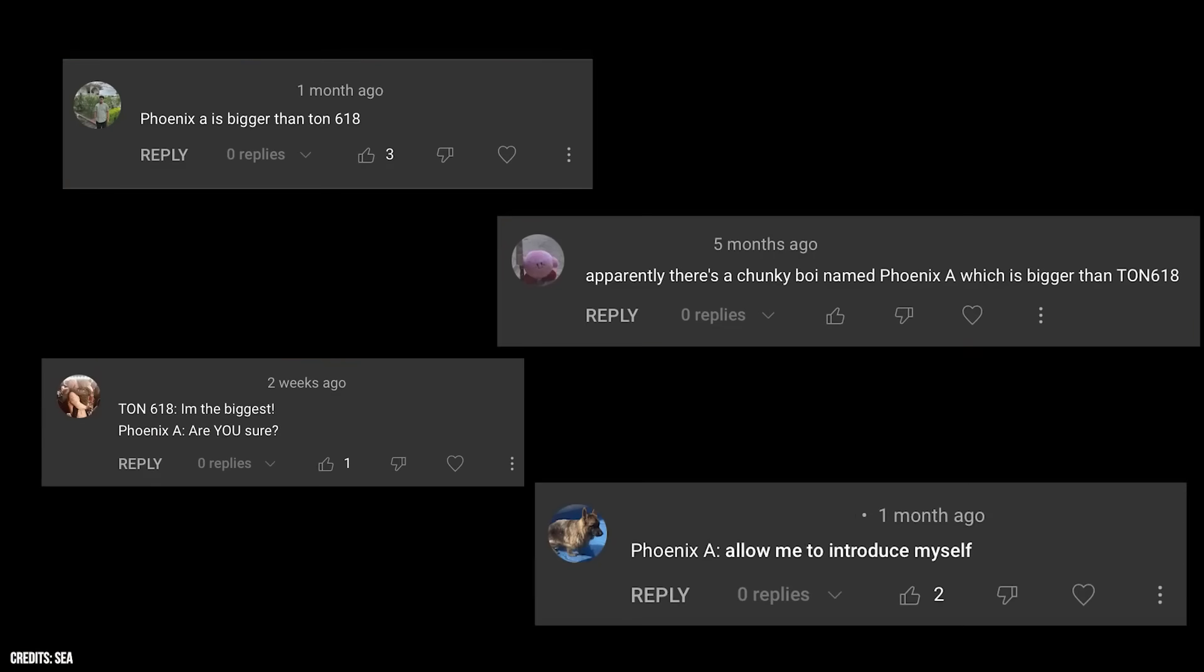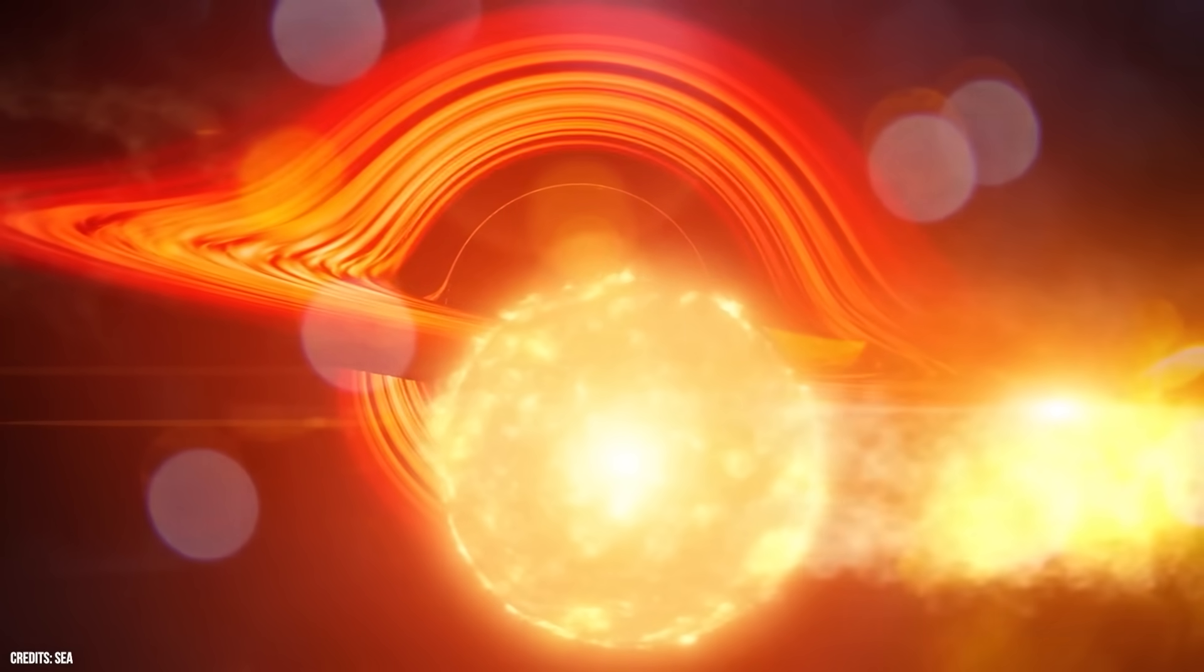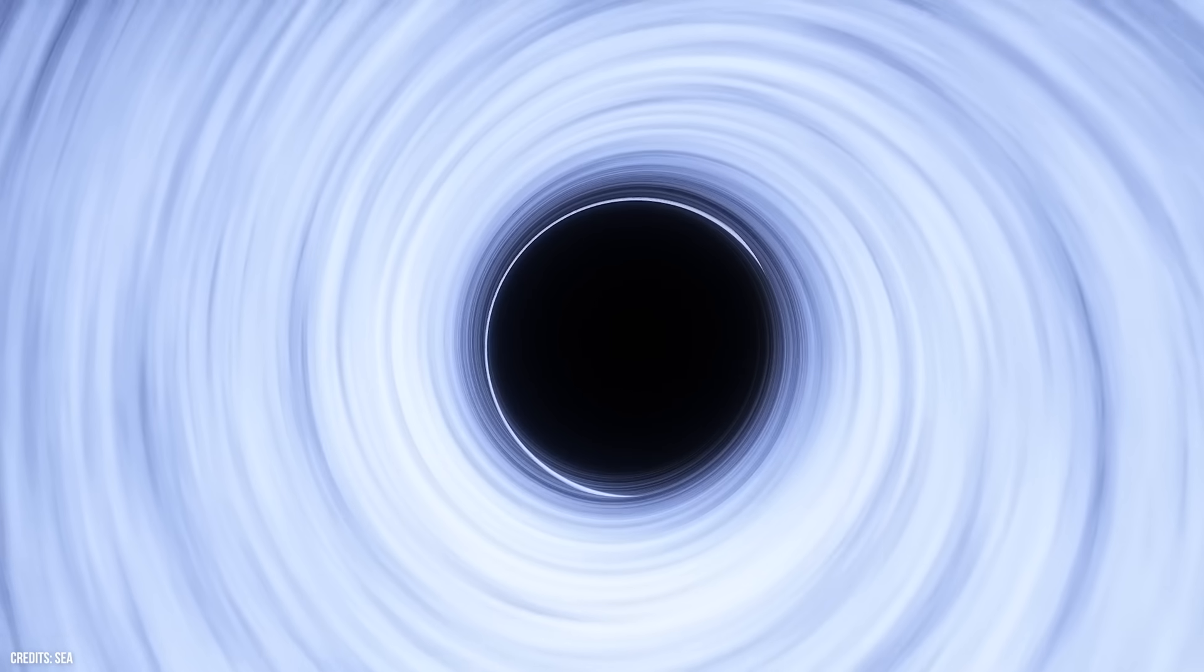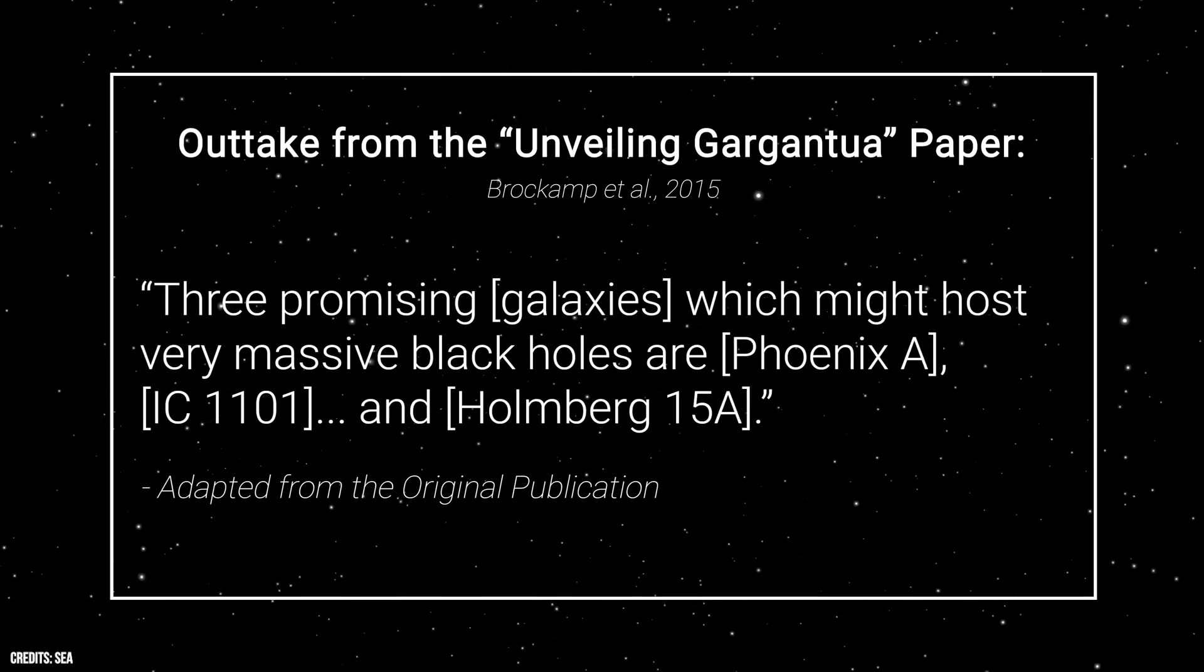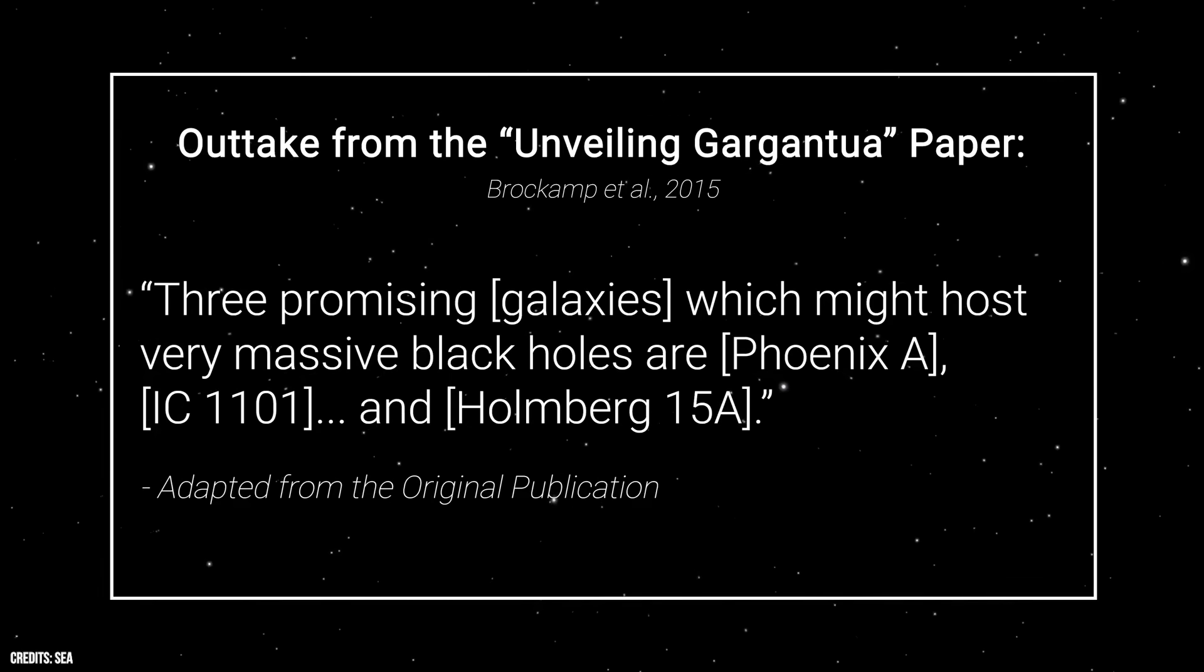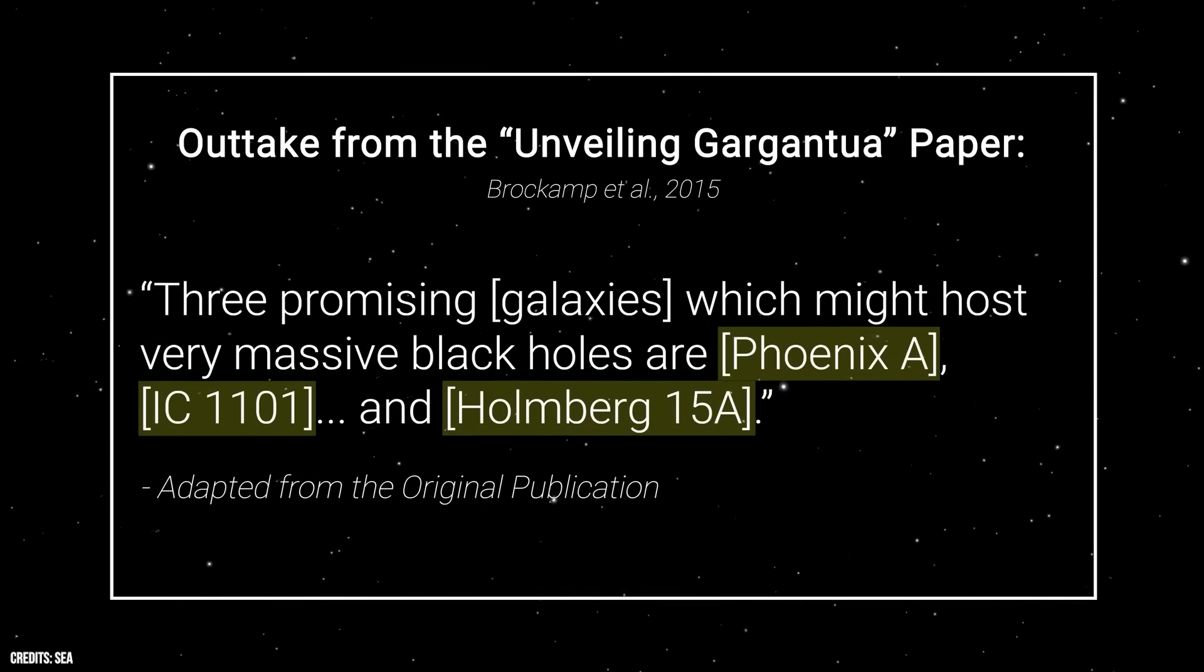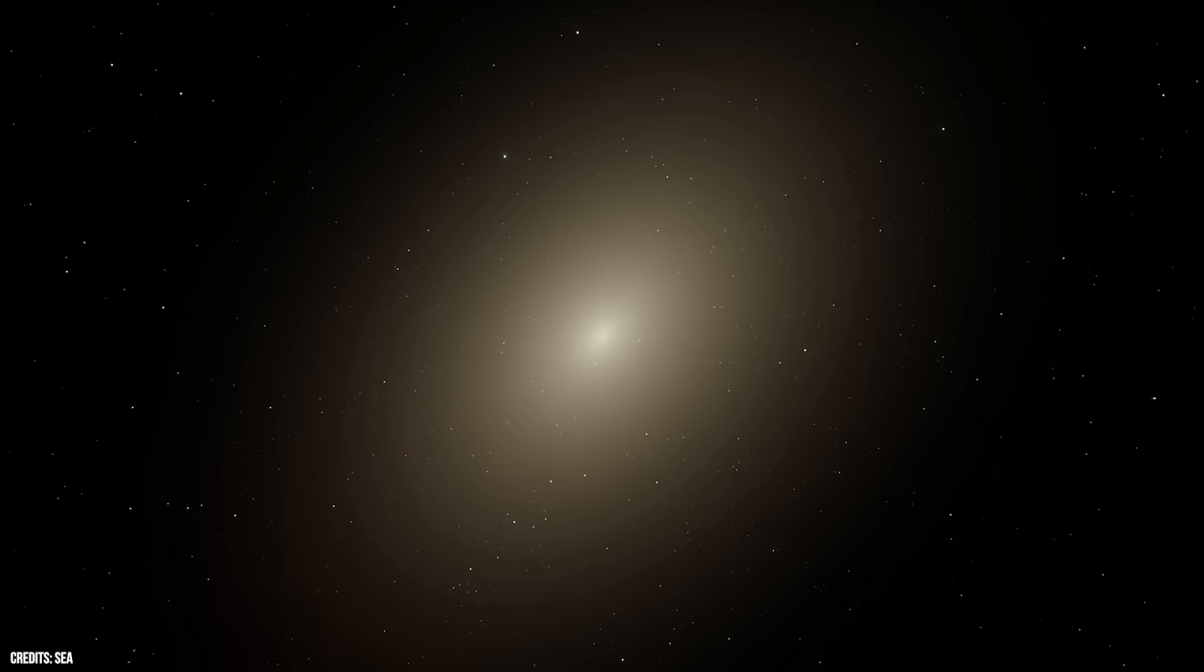In collaboration with physicist Stephen Hawking, Penrose developed mathematical models and theorems that provided insight into the nature of black holes. One of Penrose's notable contributions is the development of the singularity theorem, known as the Penrose-Hawking Singularity Theorem. These theorems, published in the 1960s, demonstrated that under certain conditions, the collapse of massive stars could lead to the formation of singularities within black holes. Penrose also introduced the concept of an event horizon, which is the boundary surrounding a black hole beyond which no information or light can escape, as we have discussed. This idea is fundamental to our understanding of black holes and their ability to trap everything, including light, within their gravitational pull.